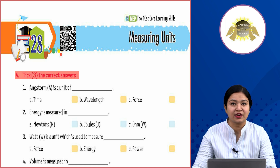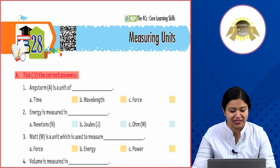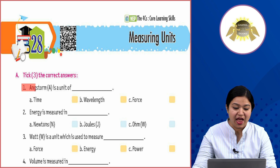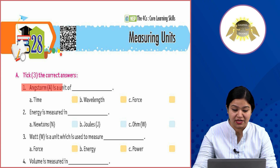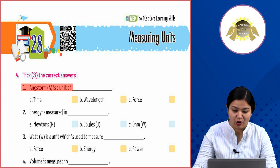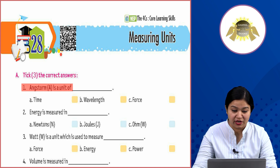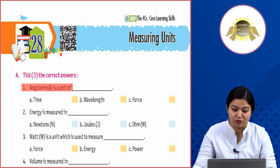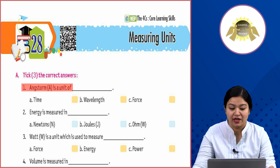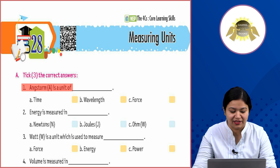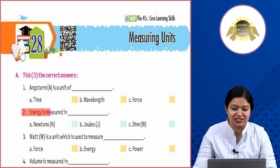First question: Angstrom is a unit of — option A: time, option B: wavelength, option C: force. The correct answer is option B, wavelength. Angstrom jo wo, kiski unit hai — option B wavelength ki.